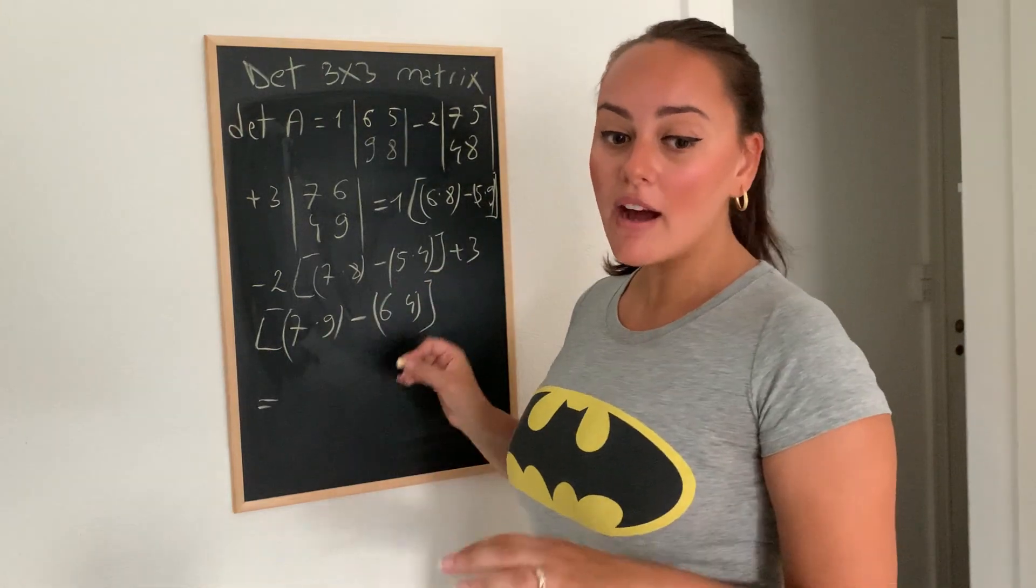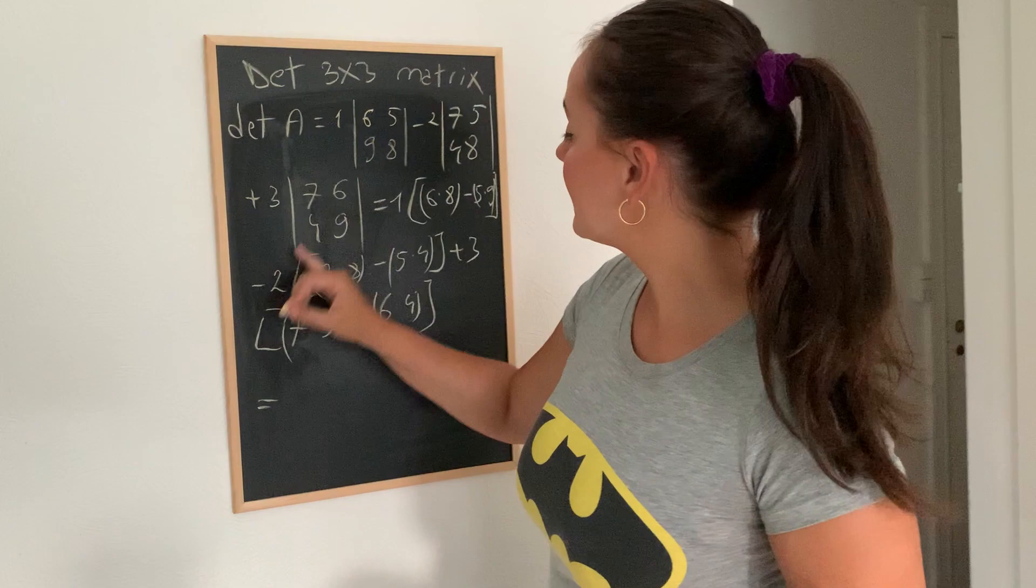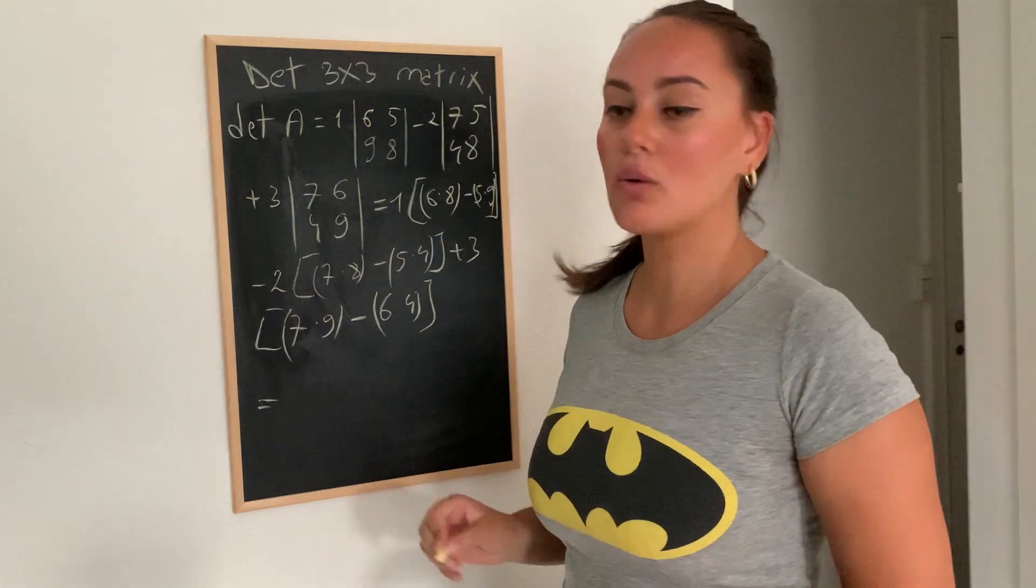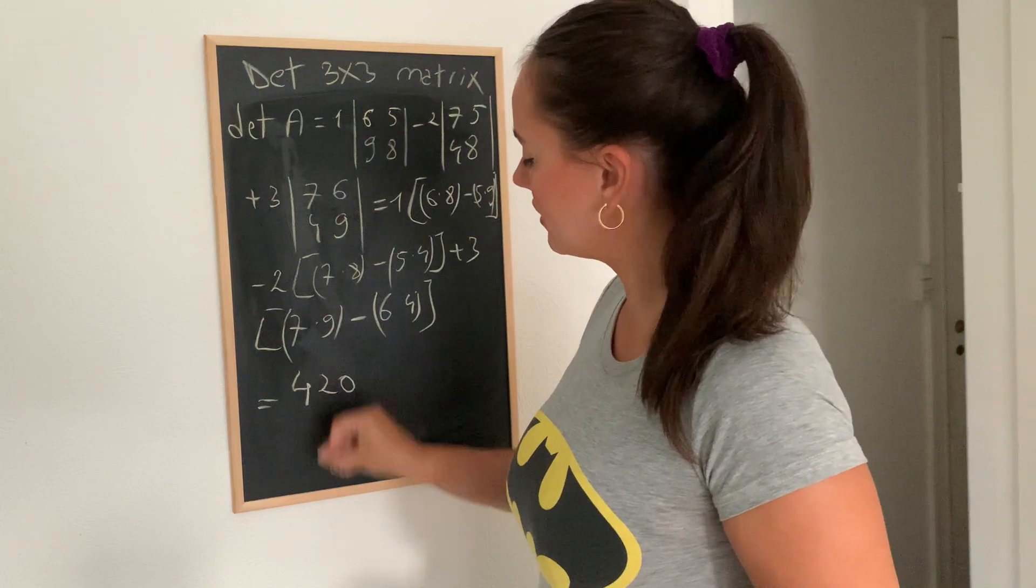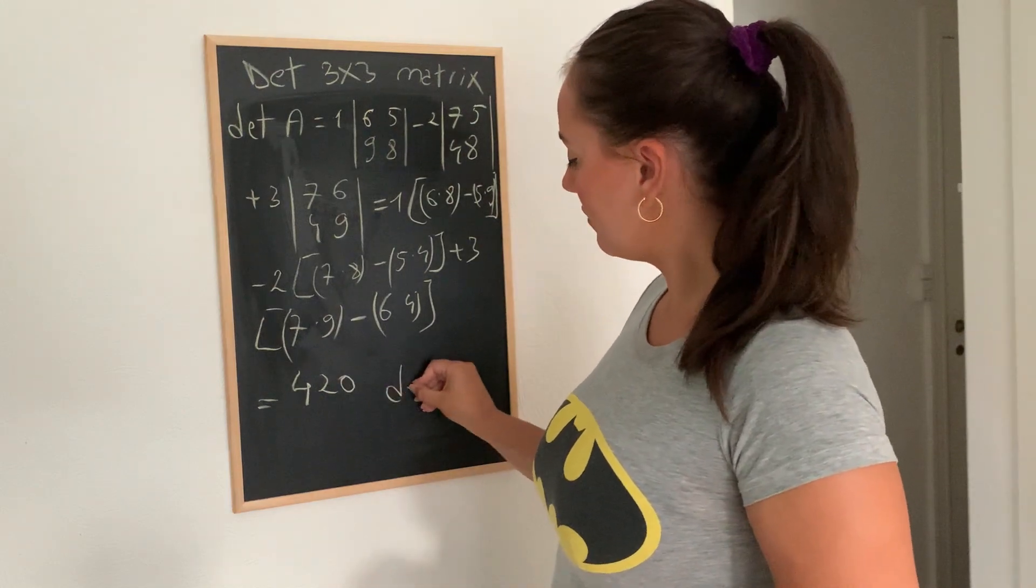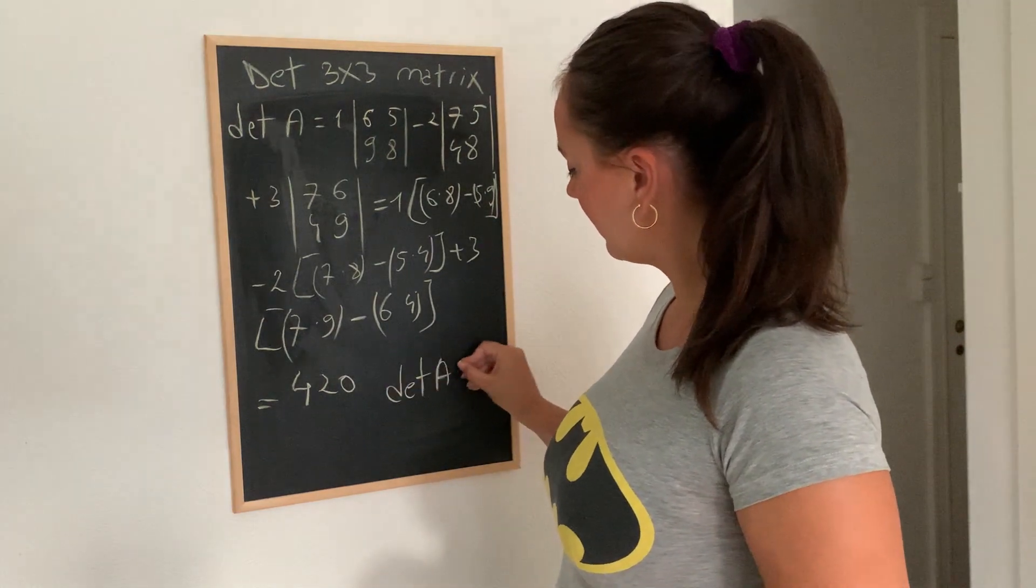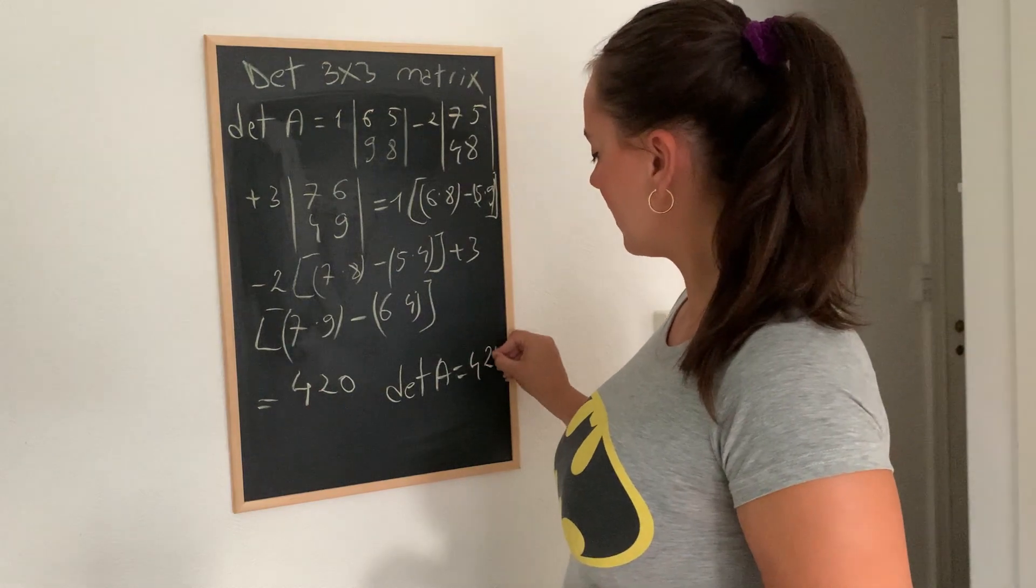which is going to be 7 times 9 minus 6 times 4. All right, so now after we calculate this entire equation, we come to the result, 420. So the determinant of A would be 420.